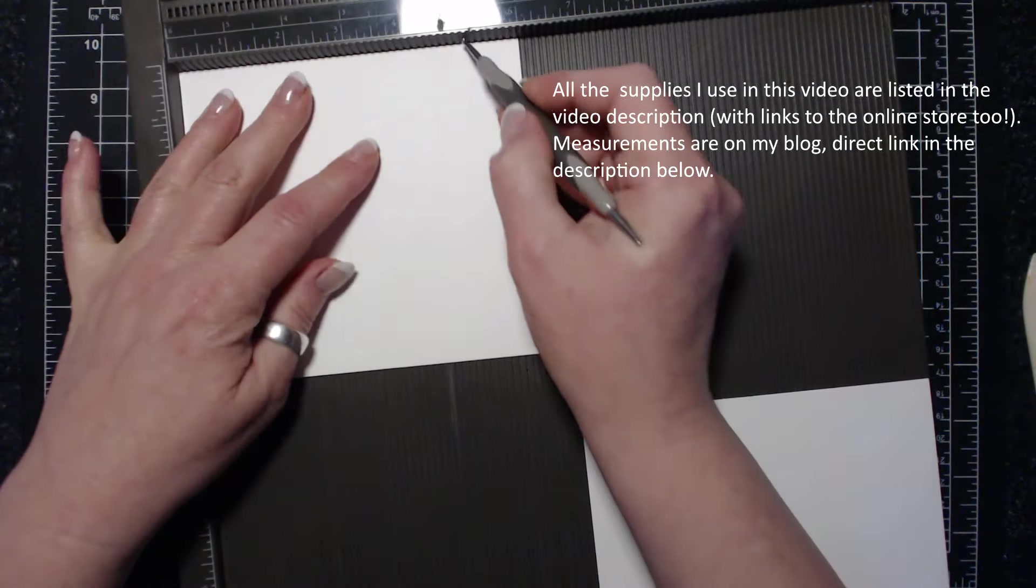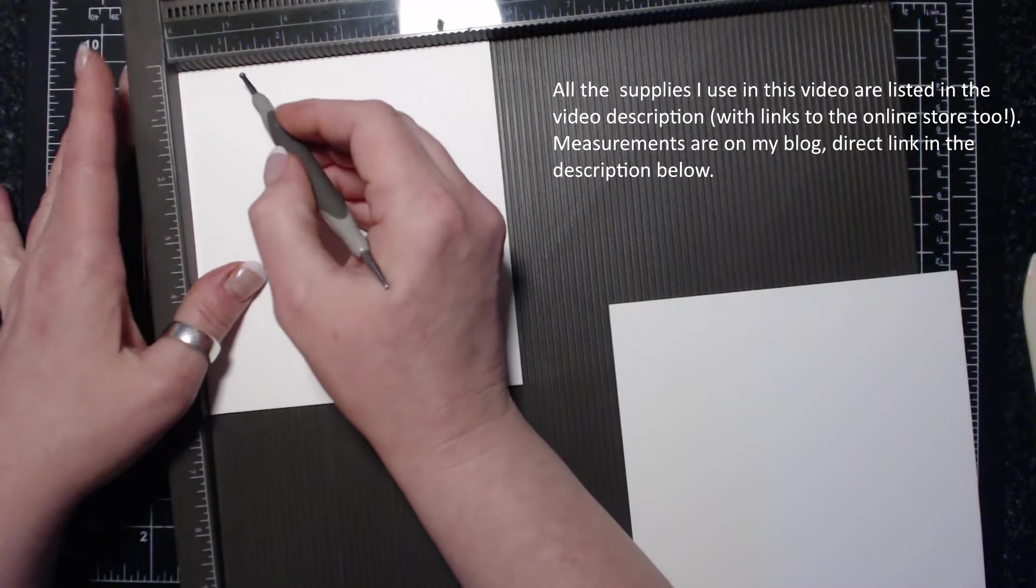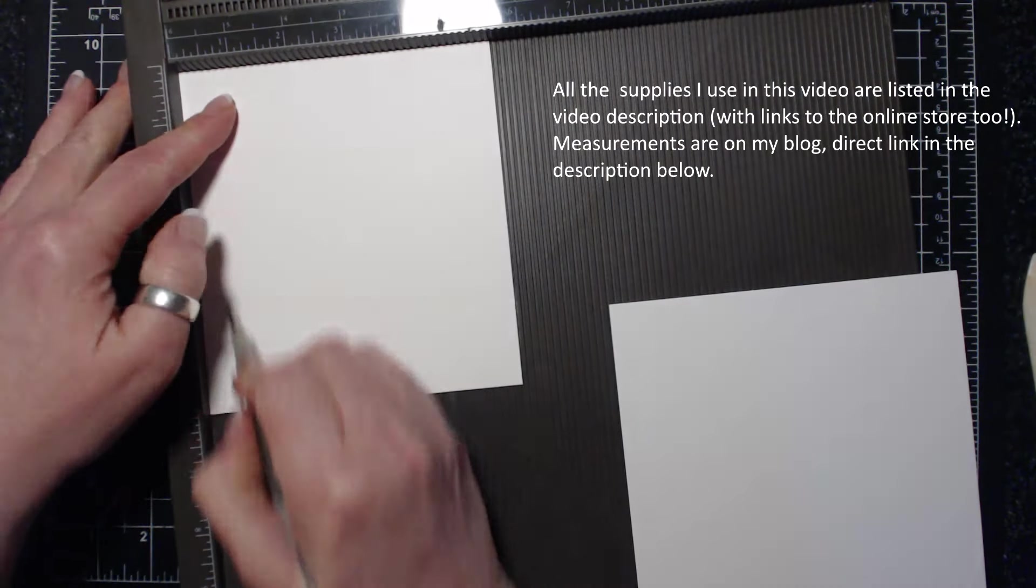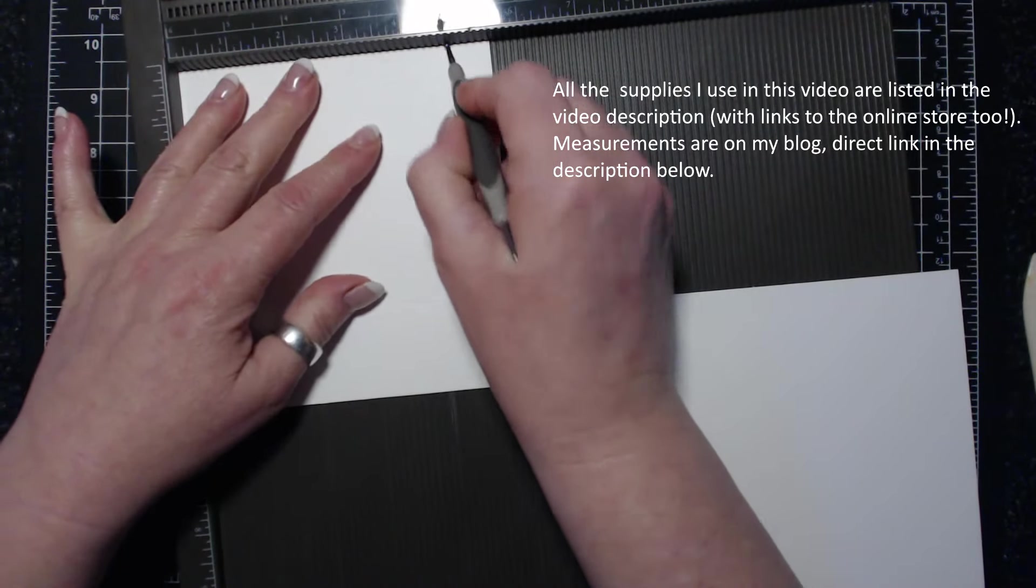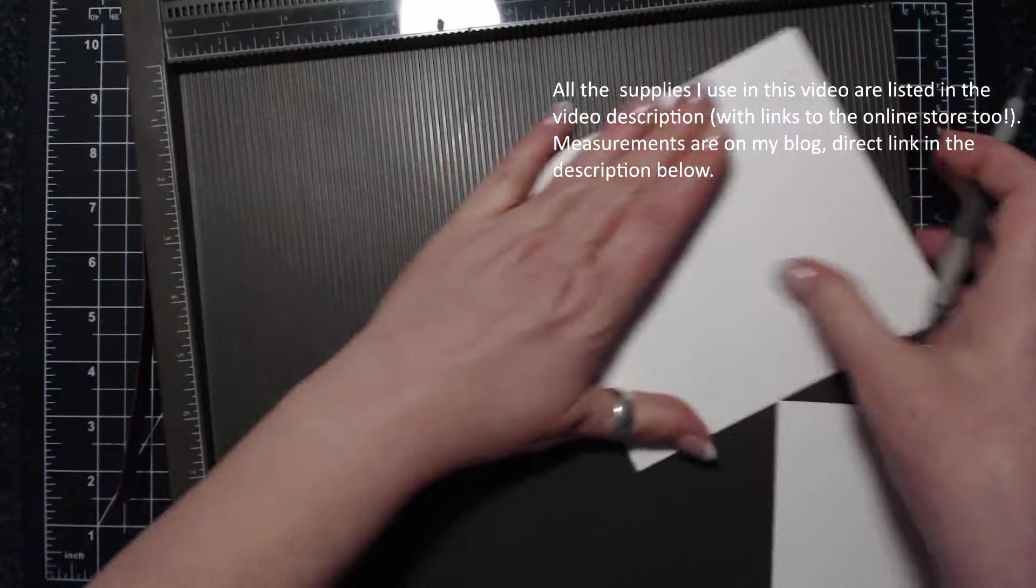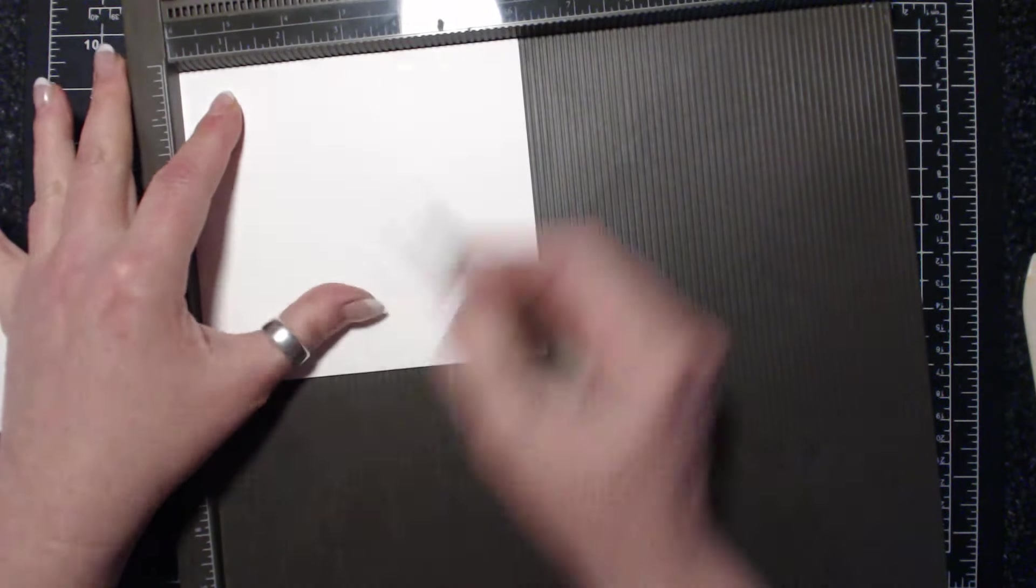We're going to turn it around and score at a half, two, and four and three quarters. Then the next one the same. So long side, one and a half and five and a half.